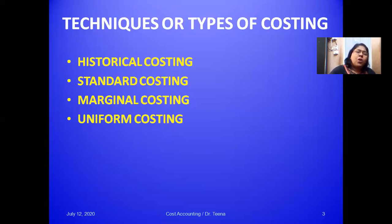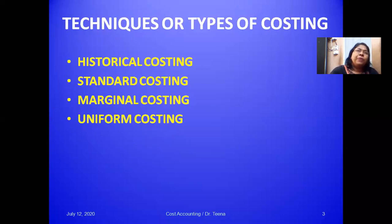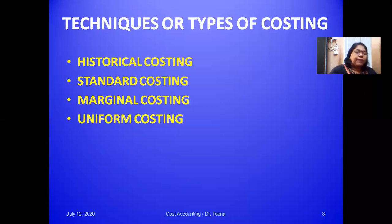Historical costing means ascertaining costs after they are actually incurred. The actually incurred cost is considered as the cost. This technique is also known as traditional costing, because we are ascertaining costs only after they are actually incurred.